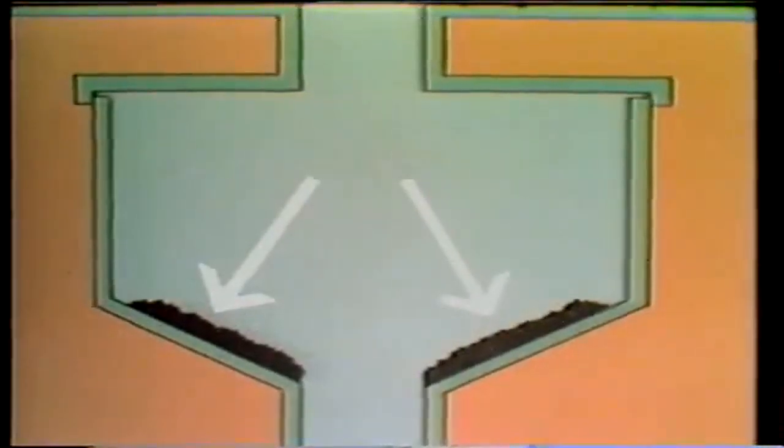Ash buildup is another problem in the bottom ash hopper. All bottom ash should be removed when the hopper is drained, but some ash may remain if the spray nozzles are misaligned. If ash does remain, note it during inspection — it will have to be removed manually. Early detection and correction of problems within the ash hopper will avoid repeated manual ash removal.